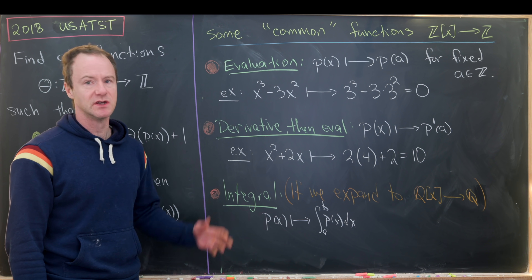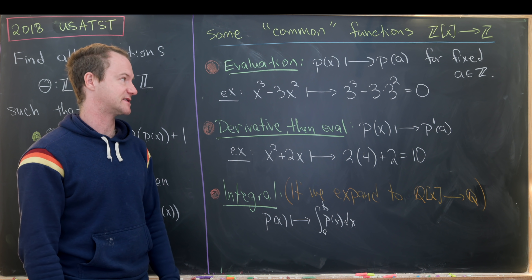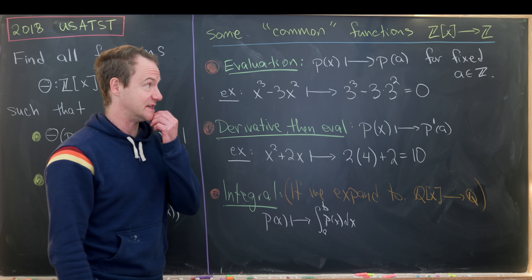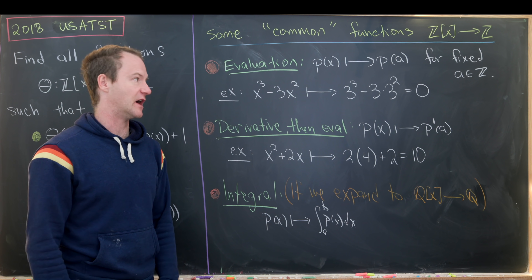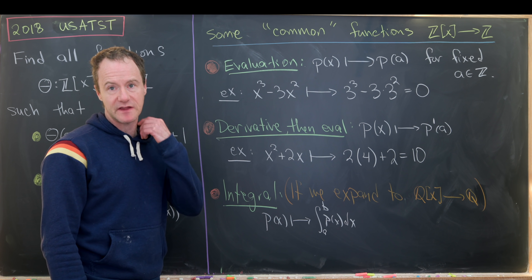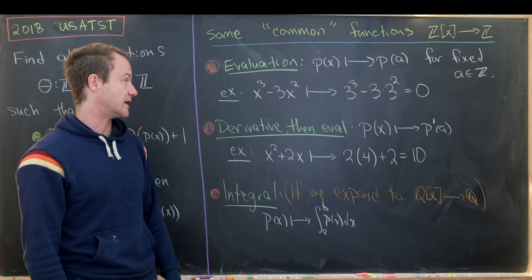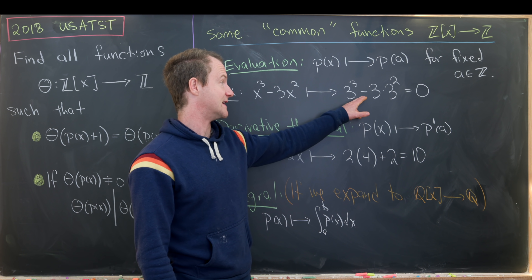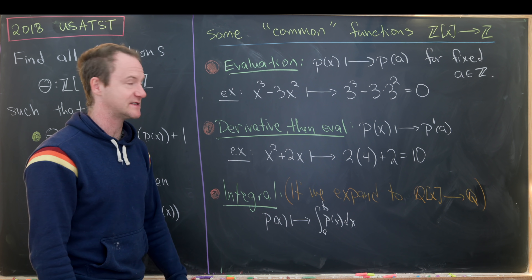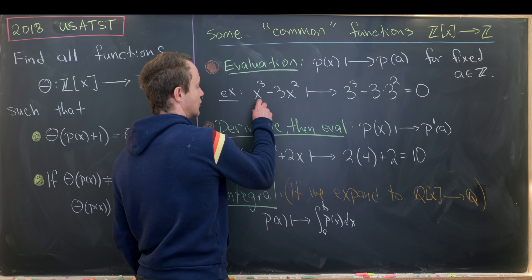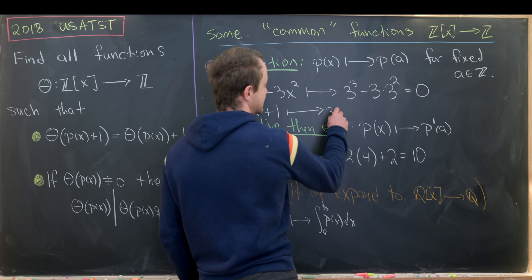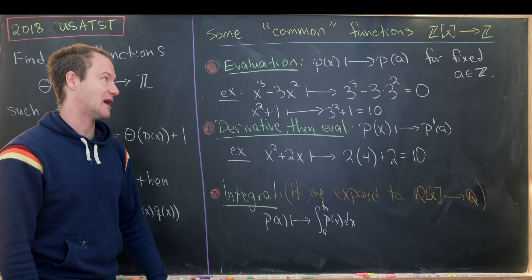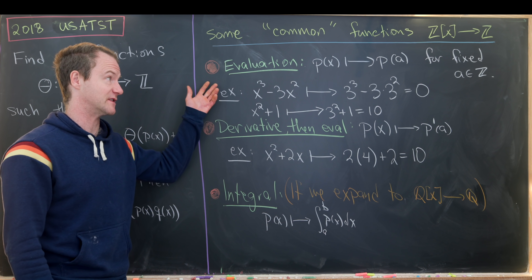Before we get started, let's go over some common functions from Z[x] to Z. The first is evaluation: it takes a polynomial as input and outputs that polynomial evaluated at a fixed integer. For example, the evaluation map at x = 3 sends x³ − 3x² to 3³ − 3·3² = 27 − 27 = 0, and x² + 1 maps to 3² + 1 = 10. This is the most common such function and probably the type of answer we're looking for.